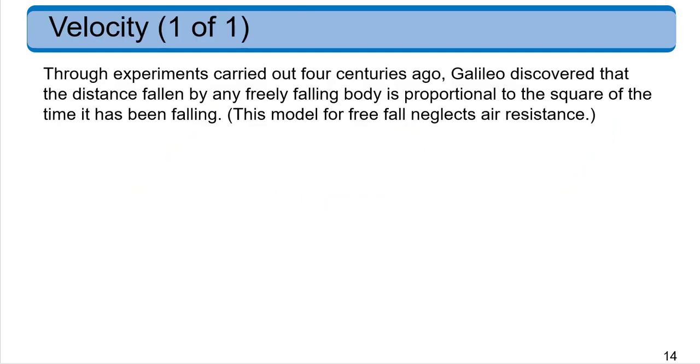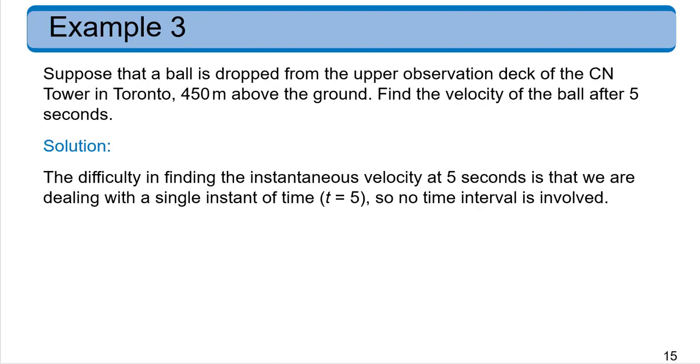Well, this is a very common problem in physics that involves the same kind of concept. And through experiments carried out a long time ago, Galileo discovered the distance fallen by any freely falling body is proportional to the square of the time it has been falling. Now, of course, this model doesn't take into account air resistance. So it's the idea that something should be falling like in a vacuum.